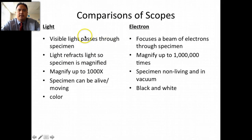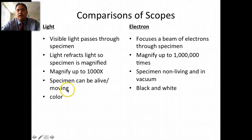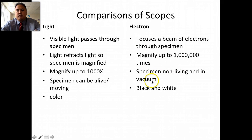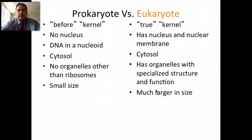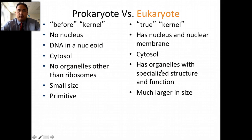We started with two types of microscopes. Light microscopes work by having visible light pass through the specimen — they can magnify up to a thousand times, the specimen can be alive and moving, and it's in color. Electron microscopes are stronger and can magnify even more because they focus electrons through the specimen, but the specimen has to be non-living, in a vacuum, and the image is only in black and white. We also talked about the difference between prokaryotes and eukaryotes: prokaryotes do not have a nucleus, eukaryotes do. Prokaryotes tend to have no organelles other than ribosomes; eukaryotes do have organelles. Bacteria tend to be prokaryotic.